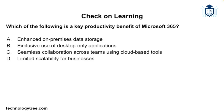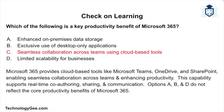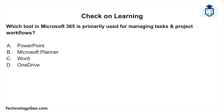Now let's do some check on learning. Question one: Which of the following is a key productivity benefit of Microsoft 365? Is it enhanced on-premises data storage, exclusive use of desktop-only applications, seamless collaboration across teams using cloud-based tools, or limited scalability for businesses? The correct answer is seamless collaboration across teams using cloud-based tools. Microsoft 365 provides cloud-based tools like Teams, OneDrive, and SharePoint, enabling seamless collaboration and supporting real-time co-authoring, sharing, and communication.